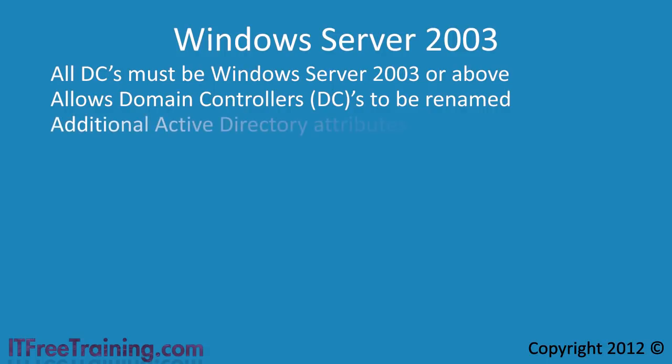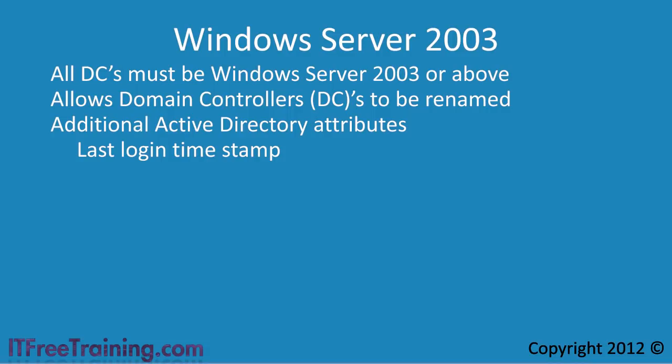The second feature adds new attributes to the Active Directory. One new attribute is the last logon timestamp. This is a useful feature that allows you to determine when a user last logged on to the domain. Using this feature, you can run a query on your domain to find any users that have not logged in for a long time, and use that information to clean out inactive users.